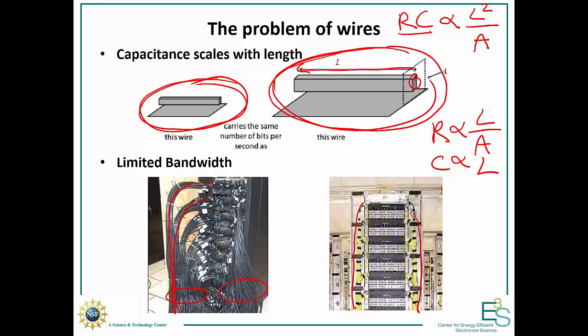Another issue with wire interconnects is that your energy for every bit of information you want to communicate is going to be proportional to CV squared and as your wire gets longer your capacitance is bigger and so you're going to be dissipating a lot of energy in those wires. You don't have that problem with optical interconnects. The longer you make your optical fiber, mostly you don't consume any extra power.